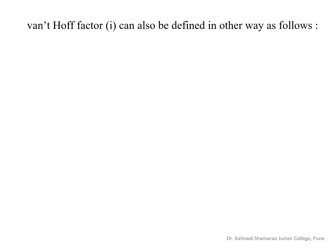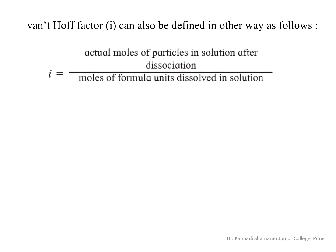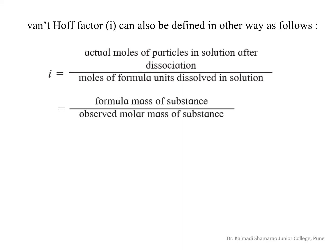The Van't Hoff factor i can also be defined as follows: i is equal to actual moles of particles in solution after dissociation divided by moles of formula units dissolved in solution. This is equal to the formula mass of the substance divided by the observed molar mass of the substance, that is i = M-theoretical / M-observed.